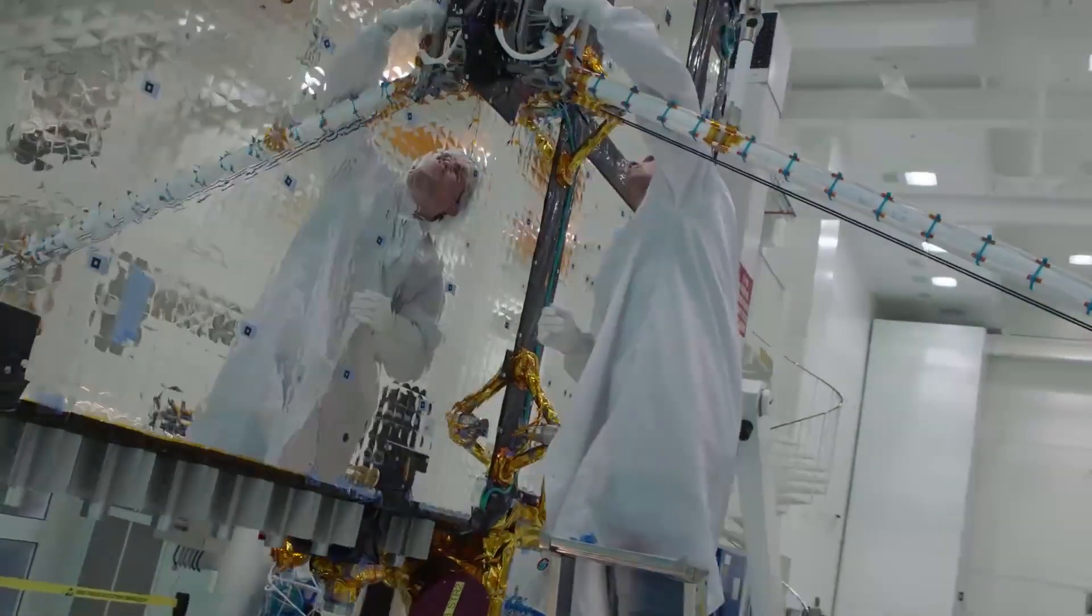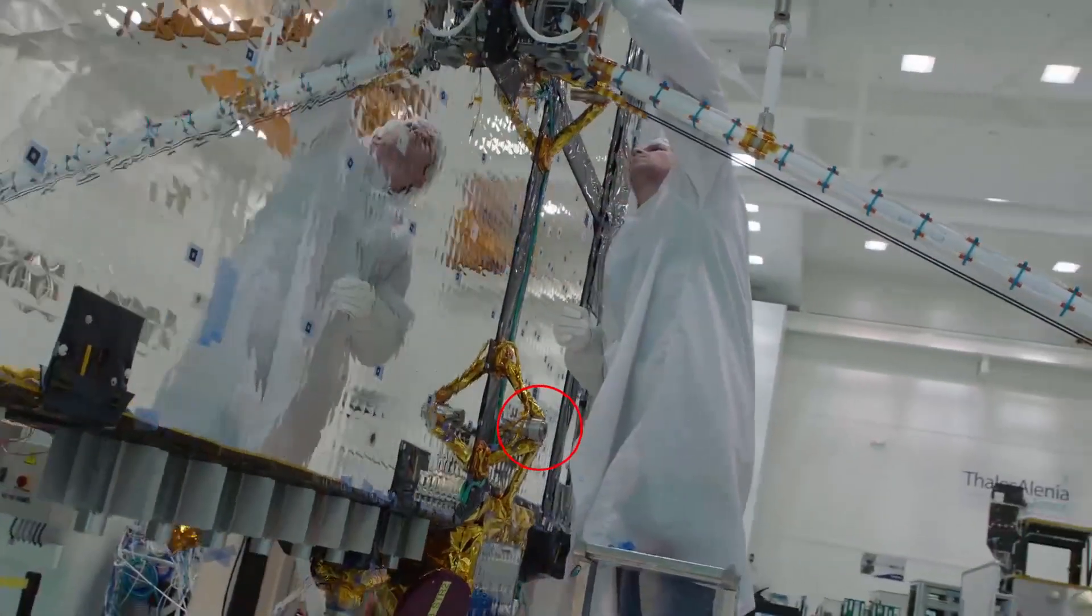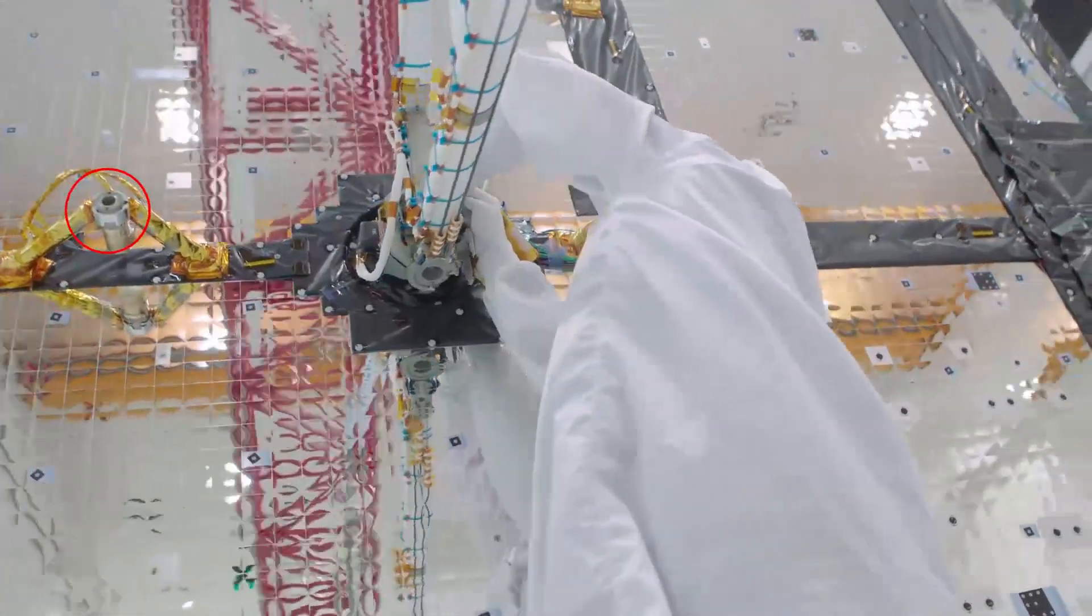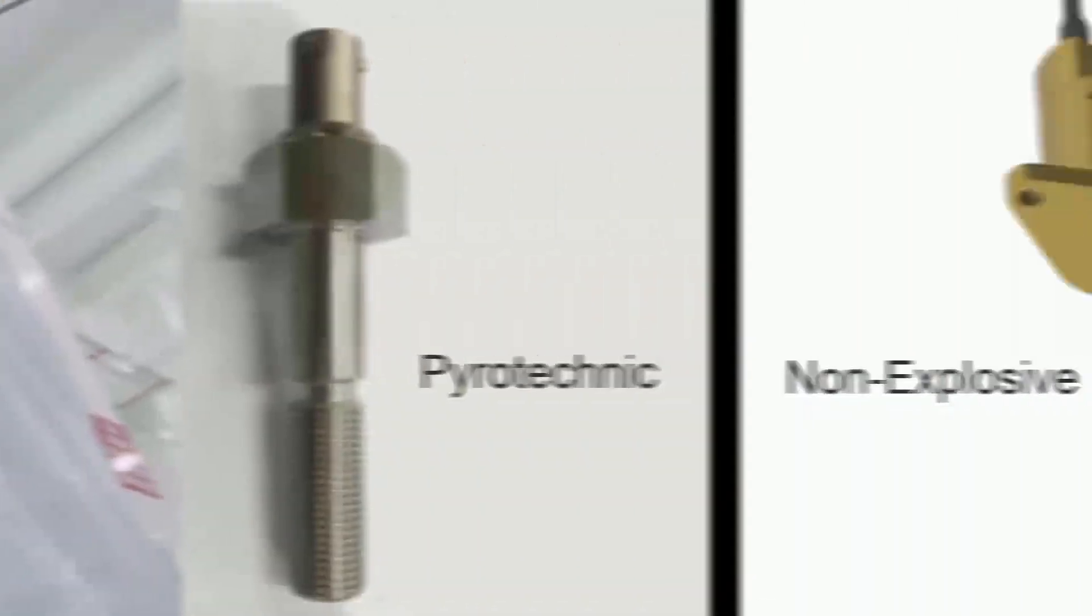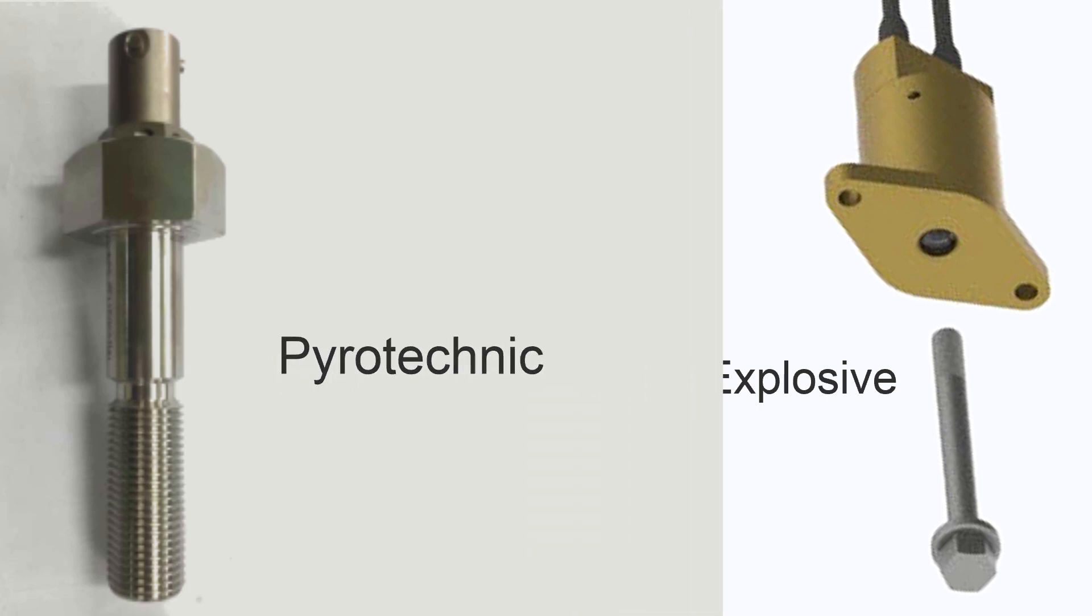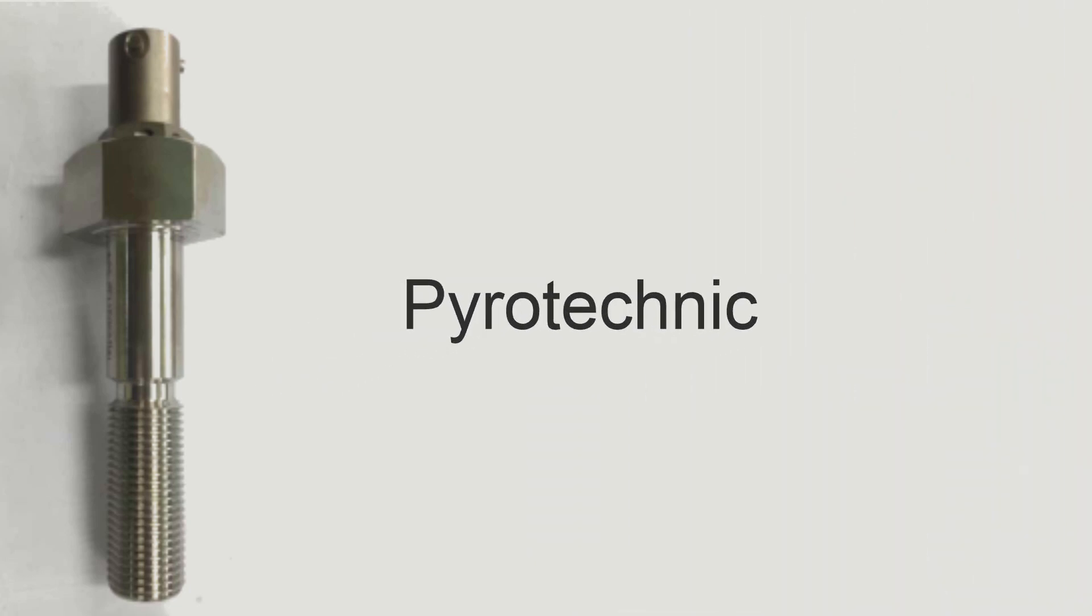So, let's look at how these hold-down release mechanisms, or HDRMs for short, achieve clean and reliable separation under these conditions. There are two basic types of HDRM, pyrotechnic and non-explosive. We'll start with the pyrotechnic design, it's the simpler of the two.